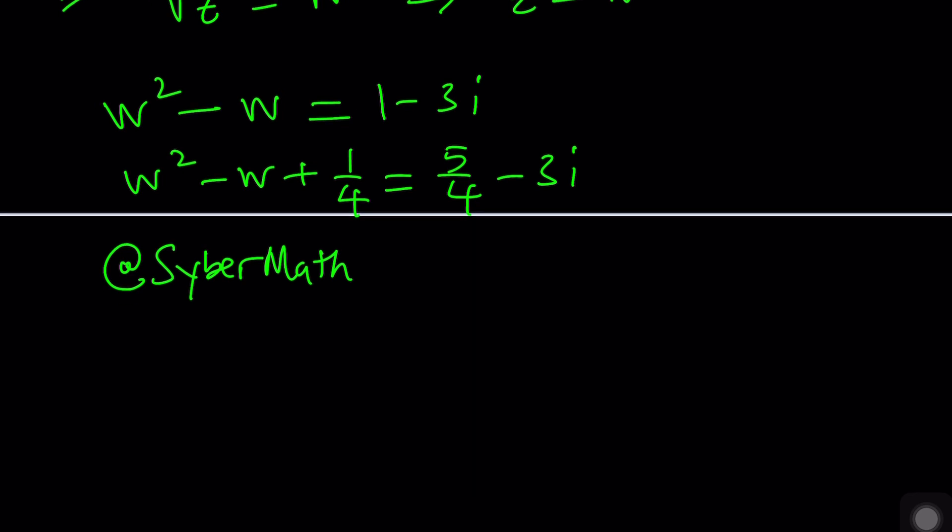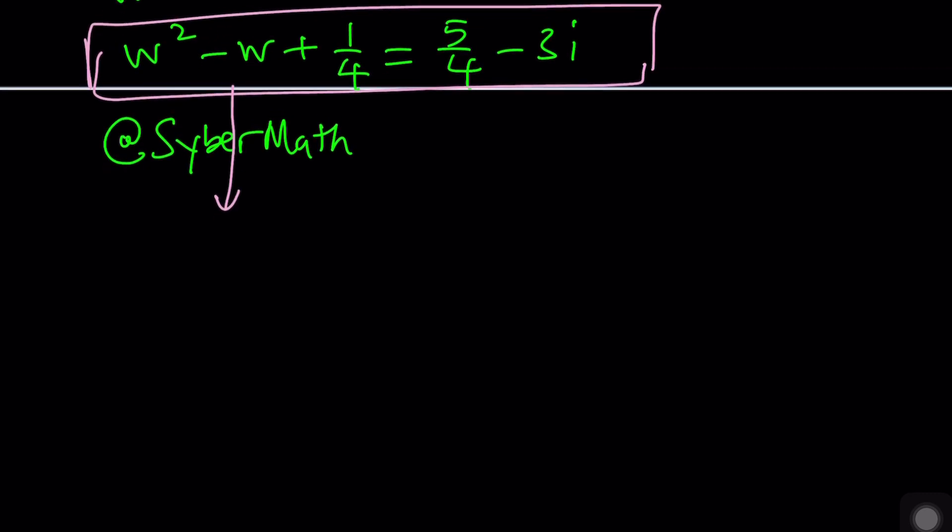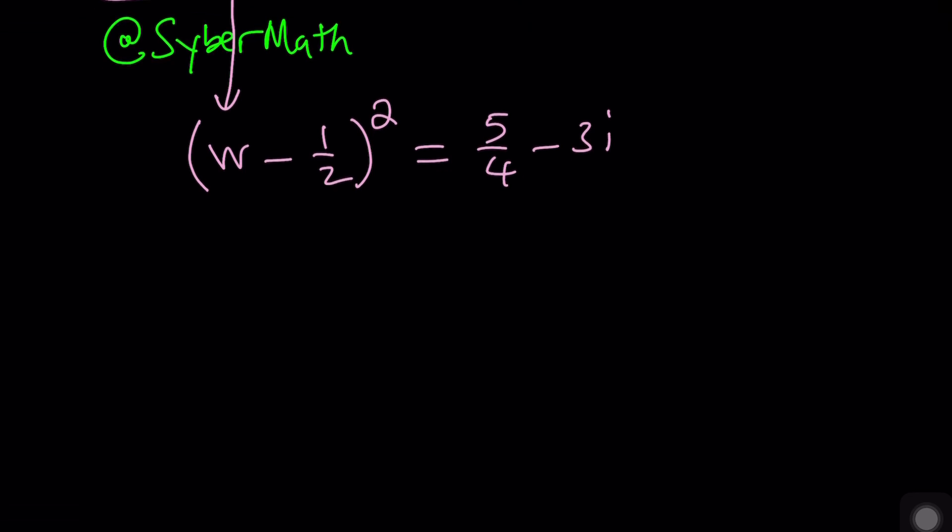So let's pick it up from here. Once you write it as a perfect square it's easy because all you have to do is write the left hand side as w minus one half squared. Now we're going to replace w minus one half with something. In other words our goal is to find the square roots of five fourths minus three i. How do you find square roots of complex numbers? There's a formula if you want to memorize it or you can do this. You can just replace this w minus one half with a plus b i and then solve for a and b. a plus b i squared becomes five fourths minus three i.